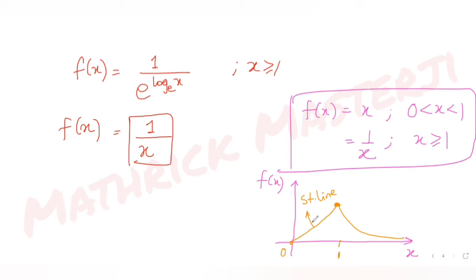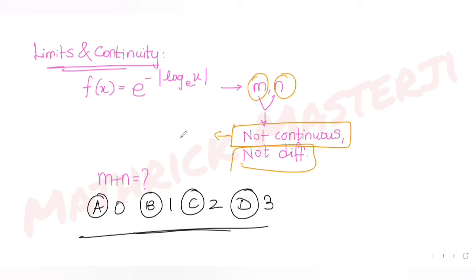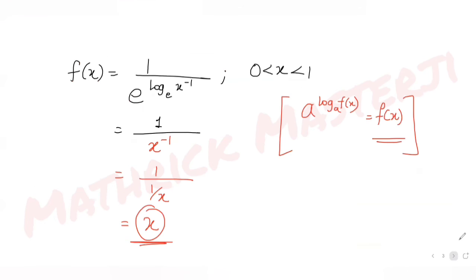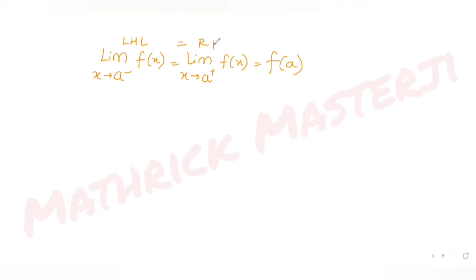Now, the question asks for m and n: m is the number of points at which the function is not continuous, and n is the number of points at which the function is not differentiable. Let's find m first. For continuity, the left-hand limit, right-hand limit, and the function's value at that point must all be equal.